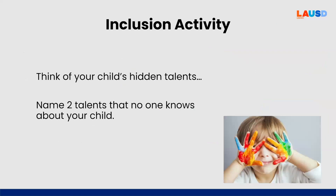Let's begin with an inclusion activity. We would like for you to think about your child's hidden talents. What special talents does your child have? For example, can your child dance a full routine? Or maybe play a sport like a professional athlete? Can they do mental math? Well, all of those hidden talents are part of what makes your child unique. And as a unique individual, your child also has a unique way of learning, too.